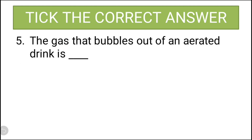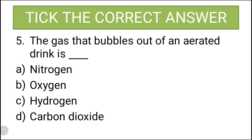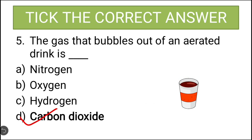The fifth question: the gas that bubbles out of an aerated drink is — the options are nitrogen, oxygen, hydrogen, carbon dioxide. The gas that bubbles out of an aerated drink is carbon dioxide, so carbon dioxide is the correct answer.